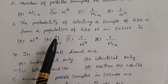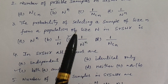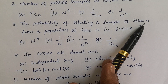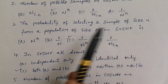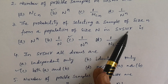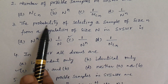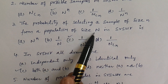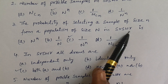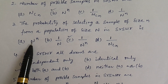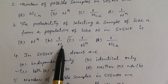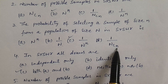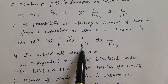Question number 3. The probability of selecting a sample of size small n from a population of size capital N in SRSWR is? Options: A) capital N power small n (this is not a probability), B) 1 by small n, C) 1 by capital N power small n, D) 1 by capital N C small n. Answer is 1 by capital N power small n, that is C.